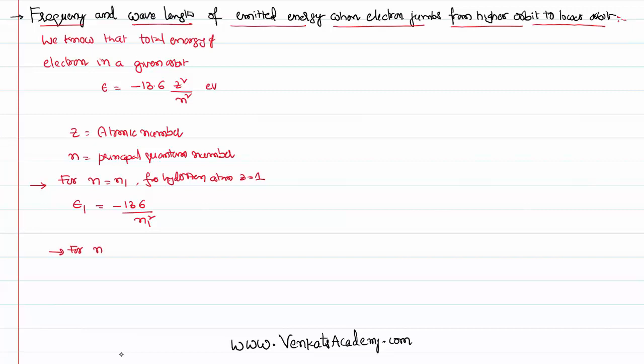Similarly, for n equal to n2 we can write E2 as minus 13.6 by n2 square. All these are the energies in electron volts. Then E2 is being obviously higher energy. The difference in the energies E2 minus E1 will become minus 13.6 by n2 square minus minus 13.6 by n1 square. So this is 13.6 times 1 by n1 square minus 1 by n2 square.